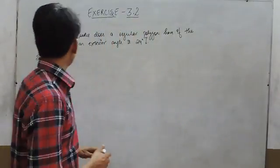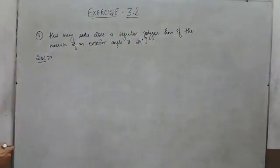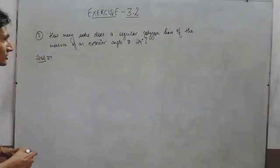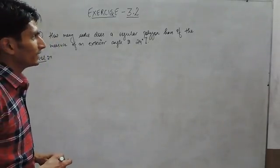Hello everyone, in this video we are going to solve question number three. How many sides does a regular polygon have if the measure of an exterior angle is 24 degrees?